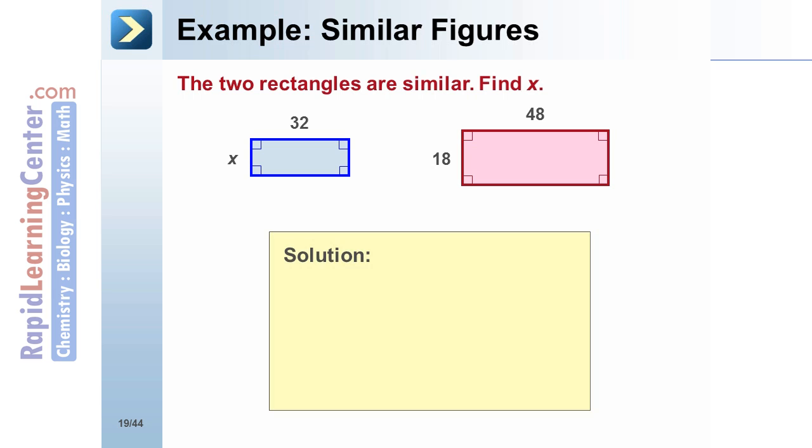to 48. Set up a proportion to solve for x: x over 18 equals 32 over 48. Find the cross products: 48x equals 576. Divide both sides by 48 to get x equals 12.